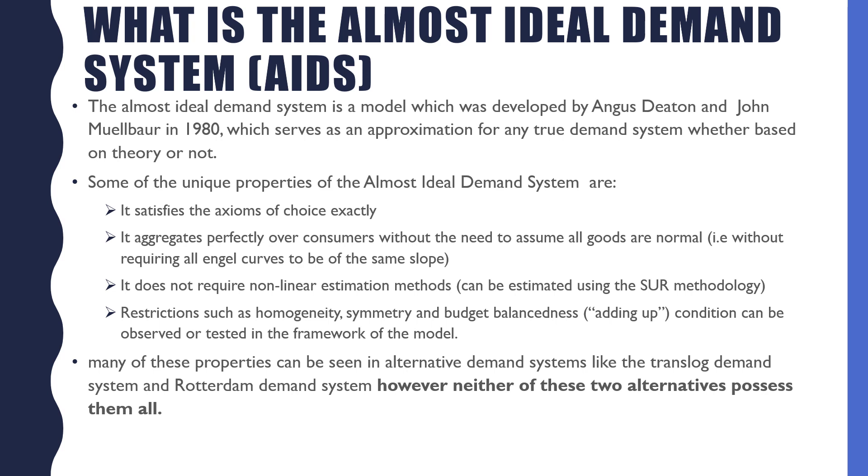Some of the unique properties of the Almost Ideal Demand System are that it satisfies the axioms of choice exactly, it aggregates perfectly over consumers without the need to assume that all goods are normal, which means we don't require that all the Engel curves have to be the same slope.